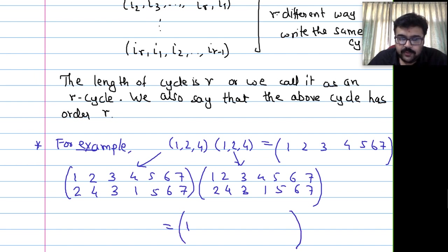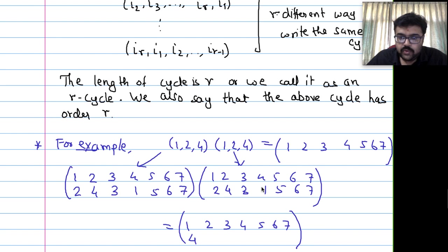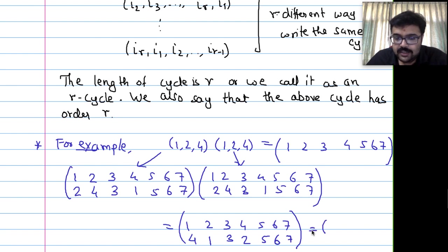So (1,2,4)^2 = (1,4,2). The order has changed — 1 goes to 4 now. And (1,2,4)^3: multiply (1,2,4) by (1,4,2). Computing: 1→2 then 2→1, so 1 maps to 1; 2→4 then 4→2, so 2 maps to 2; 4→1 then 1→4, so 4 maps to 4. Result is identity. So (1,2,4)^3 = identity, confirming order 3.